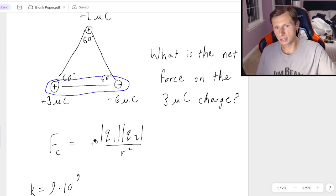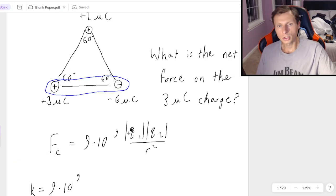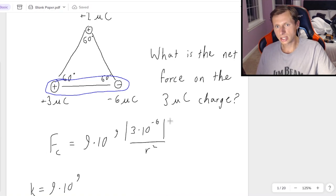k is going to be 9 times 10 to the 9th, q1 is the 3 microcoulombs. Remember that micro is 10 to the minus 6, so 3 times 10 to the minus 6. The second charge is negative 6 microcoulombs, but since I have absolute value, I'll just make that positive.